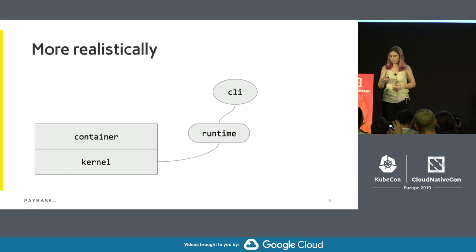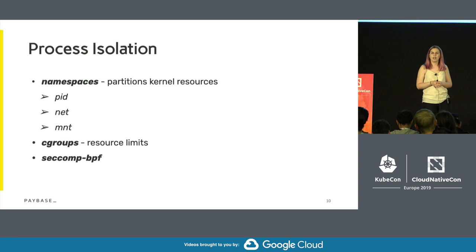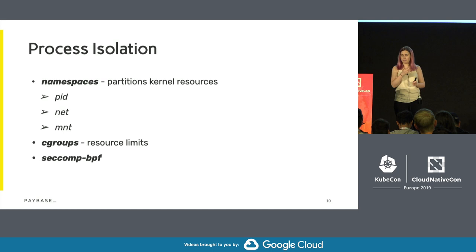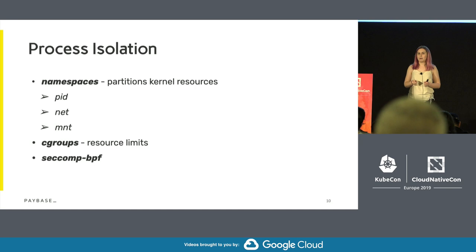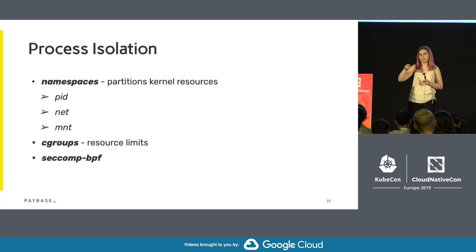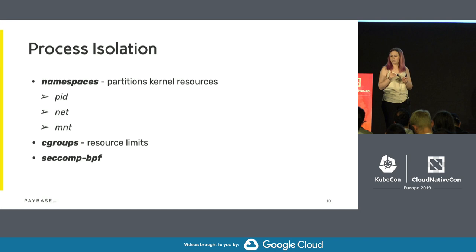The process isolation that we need for containers is given by a few features in the Linux kernel. I wanted to quickly recap for those of you that might not be familiar. First of all, we have the concept of a namespace — not a Kubernetes namespace, a Linux kernel namespace. What that does is it partitions different kernel resources in a way in which resources in the same namespace see the same things while being isolated from each other at a namespace level.